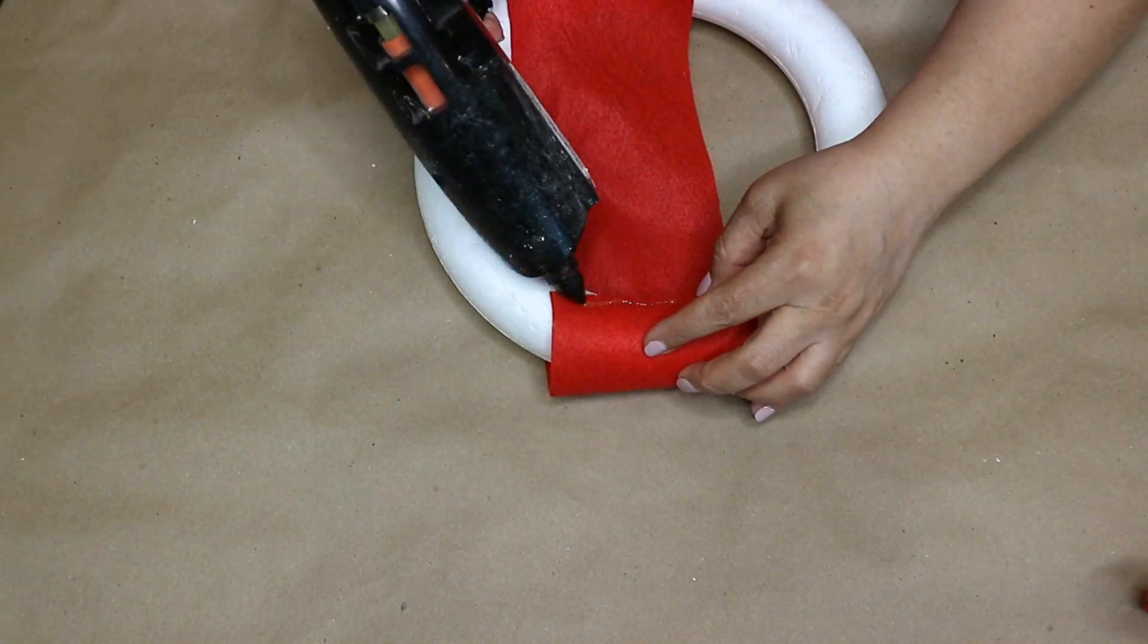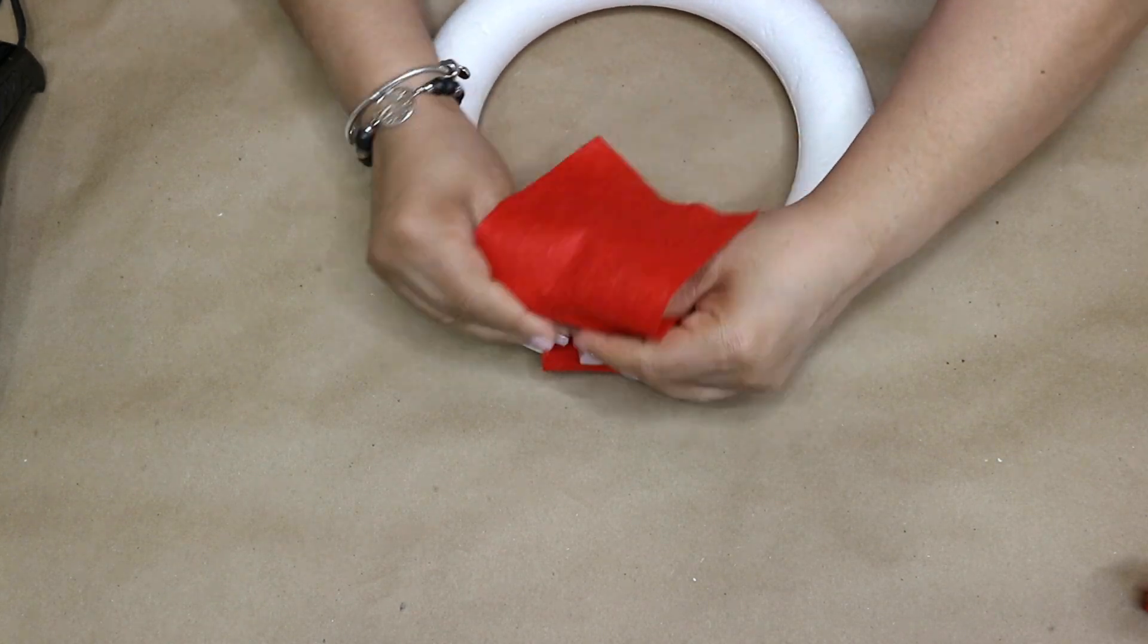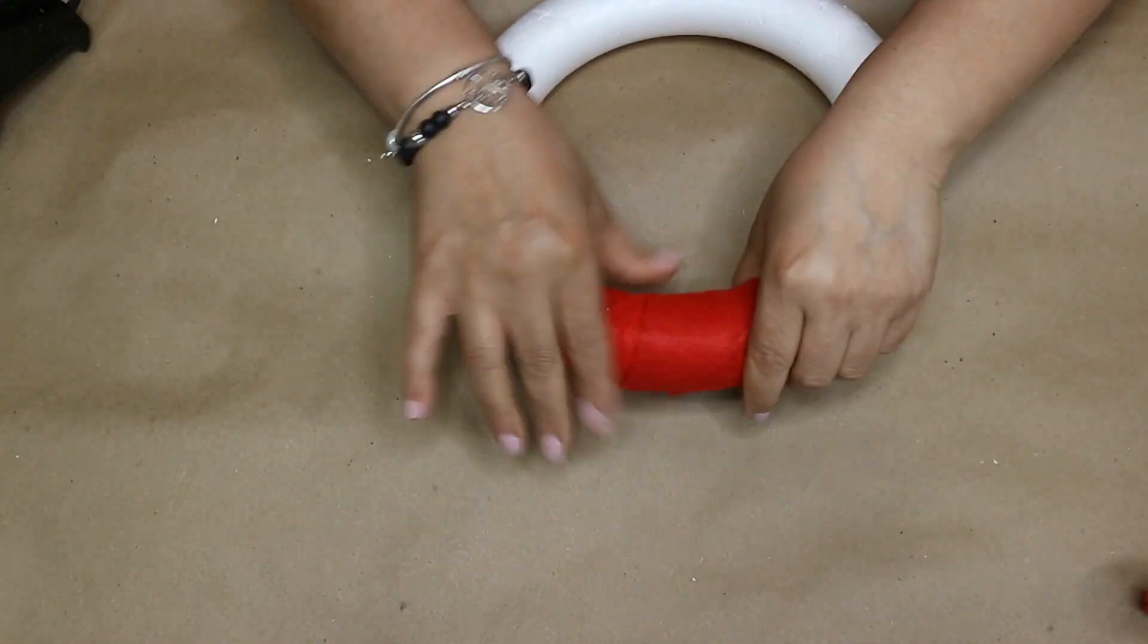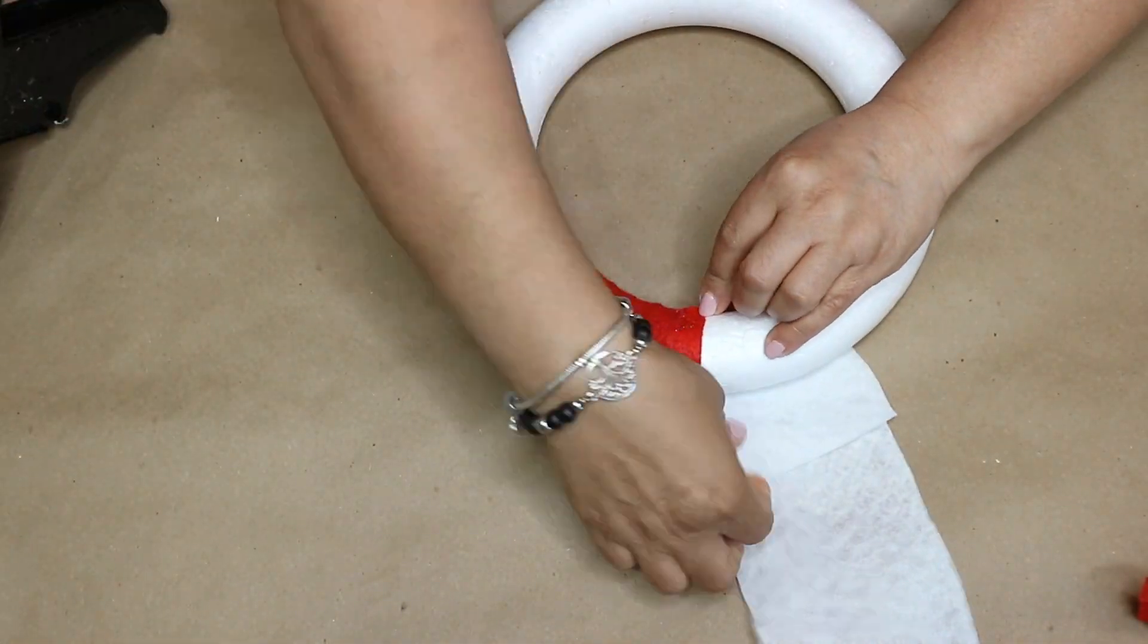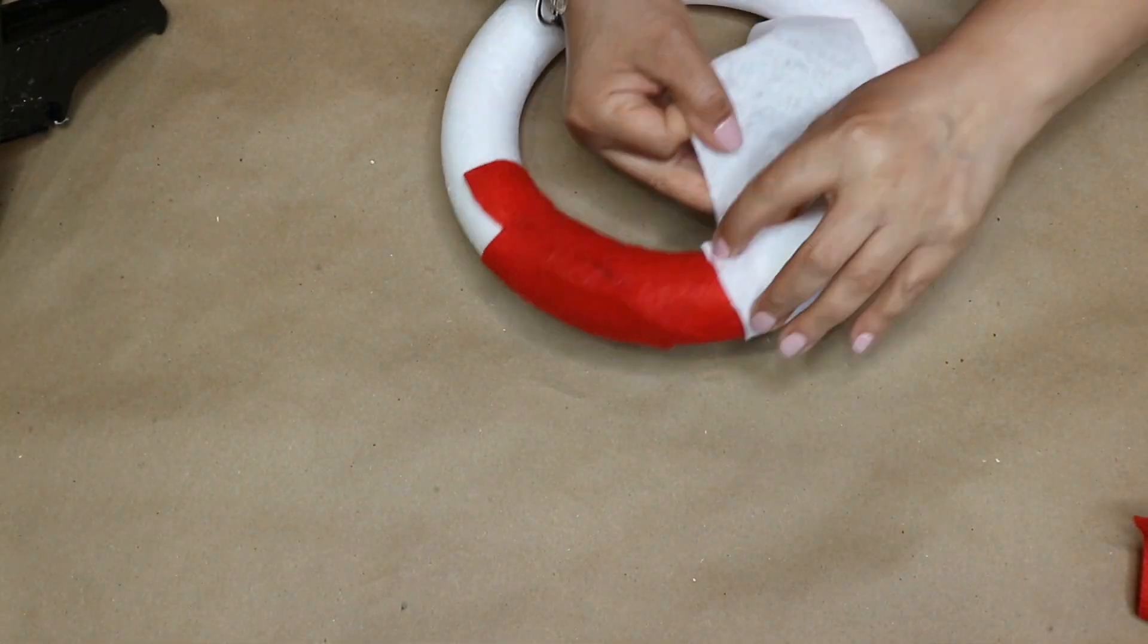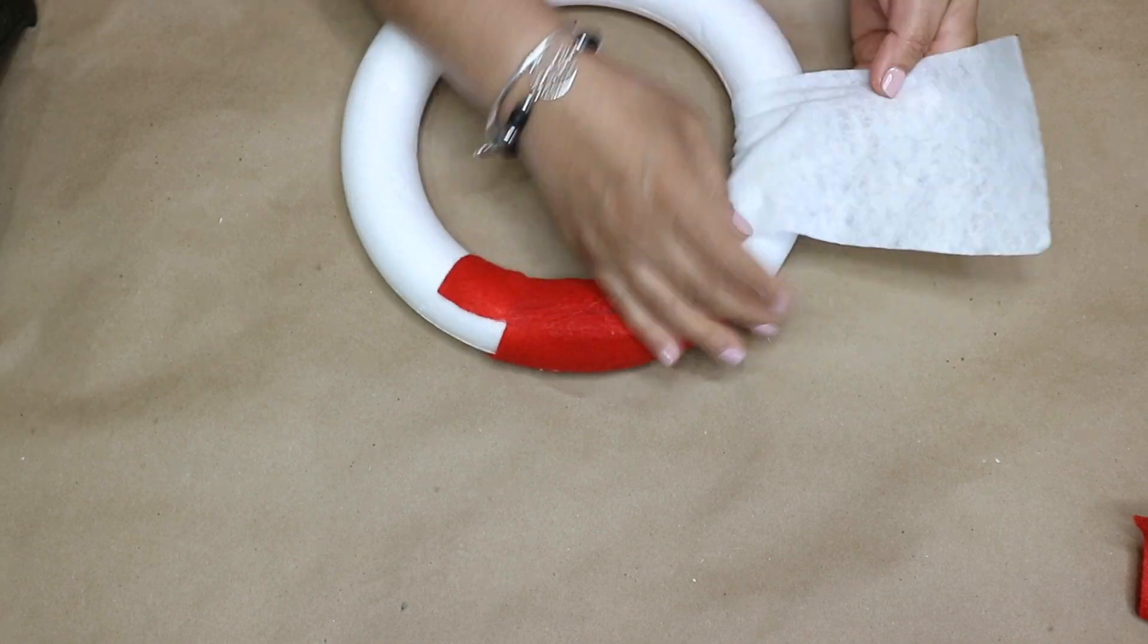Next I'm gonna secure it with some hot glue and then I start wrapping it on the wreath like you see me doing. Then I will do same thing with the rest of the strips, alternating between the red and white until I cover the whole wreath.